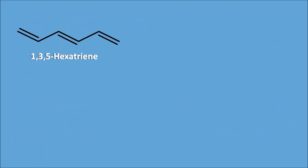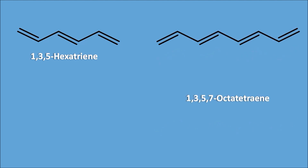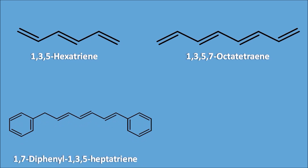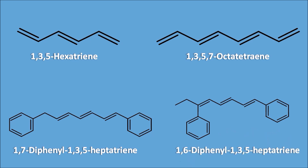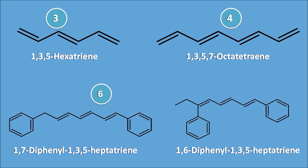The first option is 1,3,5-hexatriene and the second one is 1,3,5,7-octatetraene and the third one is 1,7-diphenyl-1,3,5-heptatriene and option D is 1,6-diphenyl-1,3,5-heptatriene. The first option has 3 pi bonds, the second option has 4 pi bonds, and the third option has 6 pi bonds. However, the pi bonds in option C are not completely conjugated.